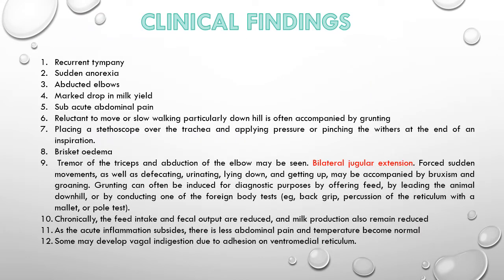Coming on to the clinical findings of TRP: there will be recurrent tympanism, sudden anorexia, abducted elbows, marked drop in milk yield, and sub-acute abdominal pain. Reluctance to move or slow walking, particularly downhill, is often accompanied by grunting in sick animals. There will also be brisket edema, tremor of the triceps, and abduction of the elbow. There is bilateral jugular distension, which is very important for diagnosis. Forced sudden movements as well as defecating, urinating, lying down, and getting up may be accompanied by bruxism and groaning.